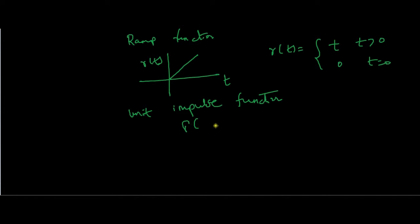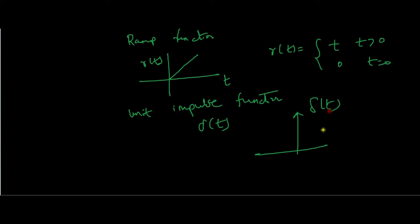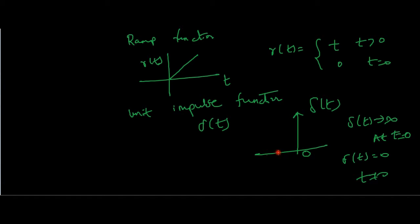The delta function δ(t) approaches infinity at t equal to 0, and its value is equal to 0 if t is not equal to 0. You can see the value is all 0 everywhere, and at t equal to 0 it shoots up to infinity. Since we are dealing with the basics of signals and systems, we will have to solve a couple of examples involving all these functions to really get a grip on what we have done.